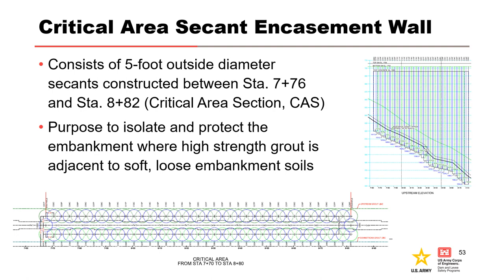Cased drilled shafts were installed to encase the embankment area where the cutoff wall needed to be constructed through the area previously damaged by the 1957 incident. This was done to eliminate the risk of slurry used with the hydromill possibly initiating erosion in the damaged embankment.